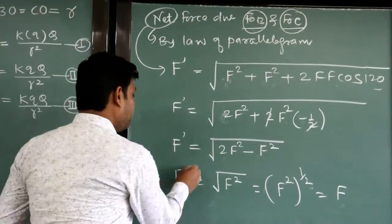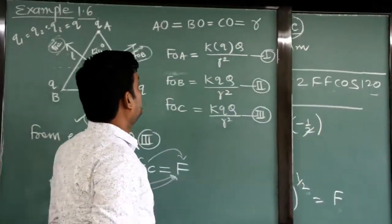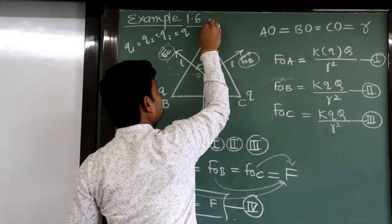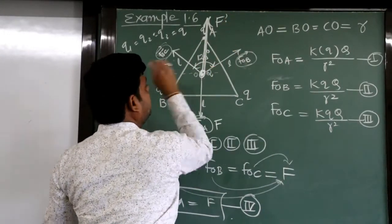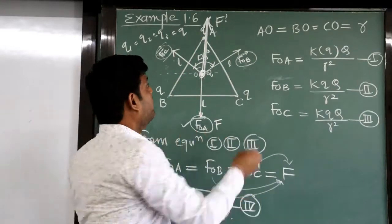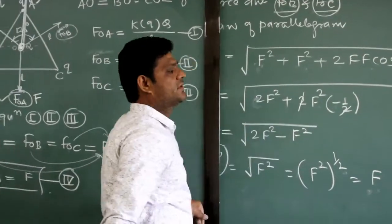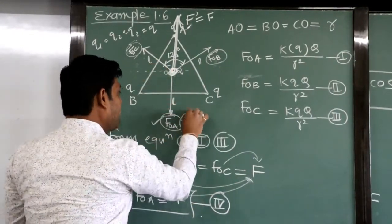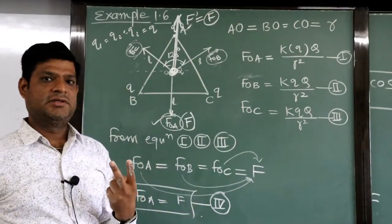So F' equals F. F' is the net force of FOB and FOC. So at the center, two forces are acting: one is F' (the net of FOB and FOC) and the other is FOA, which is also F.